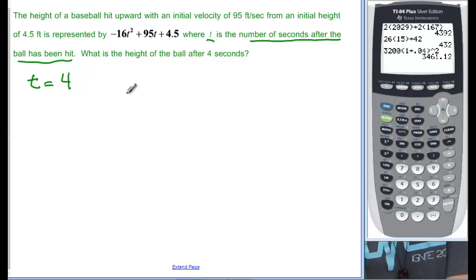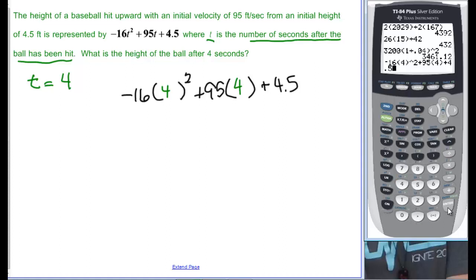So negative 16 times 4, and then that squared, plus 95, again times 4, and then plus 4.5. And just go right to your calculator. Most people would anyway. It's not really cheating if we had to pay for it. So caret 2, plus 95 times 4, I'm just going to do multiplication in parentheses, plus 4.5, and enter.